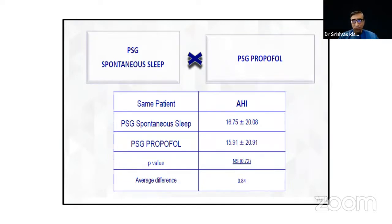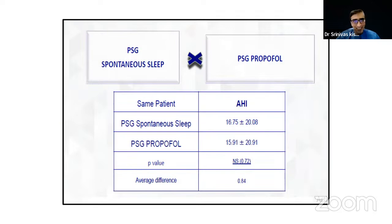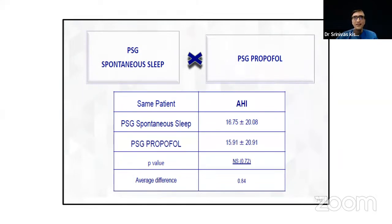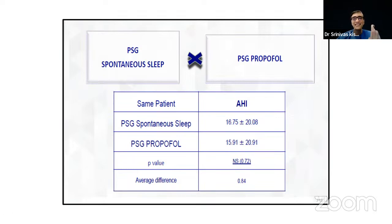DISE comes in after gold standard therapy has failed and you want to find the next best treatment modality — whether surgery, positional therapy, or a mandibular advancing device. When you do polysomnography with propofol, the disease burden numbers are the same as natural sleep, so you are not doing any injustice to your patient.